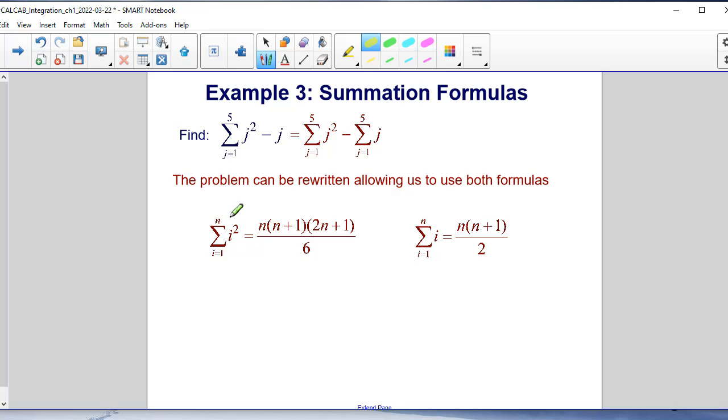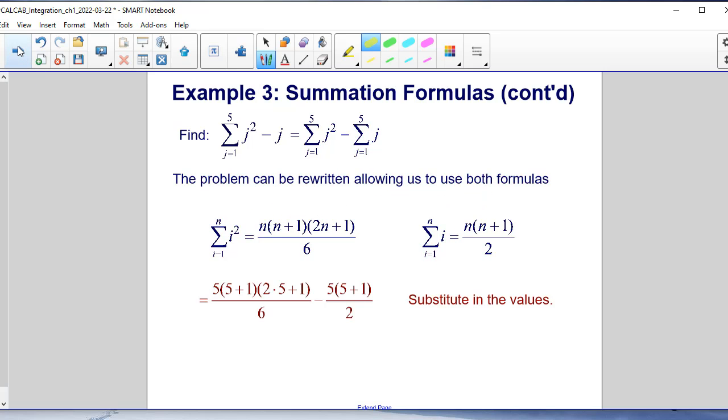Now we recall that the sum of i squared is the same thing as n times n plus 1 times 2n plus 1 divided by 6, and the sum of i is equal to n times n plus 1 divided by 2, which means that this upper bound n is going to be replaced into each of these n values for the formula.